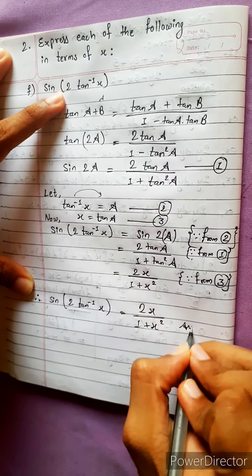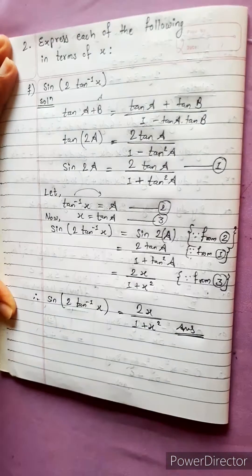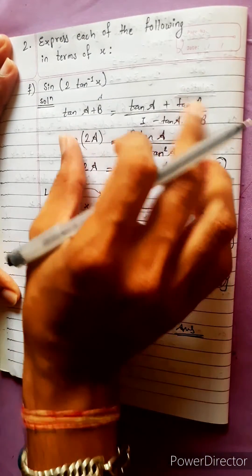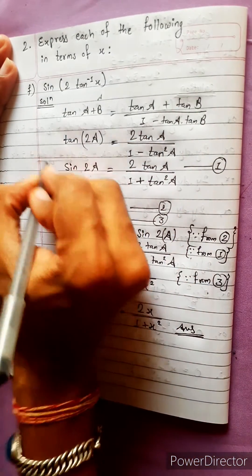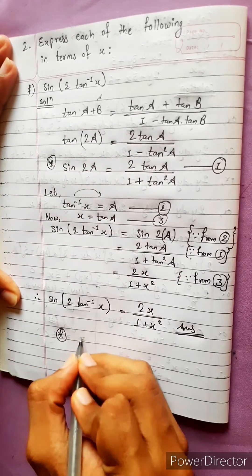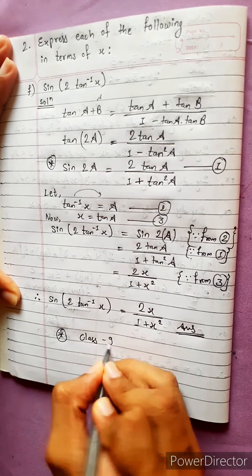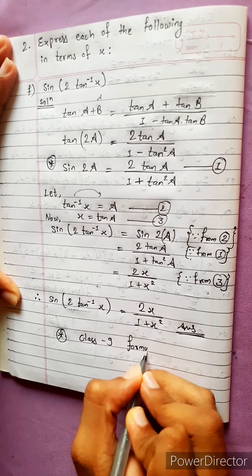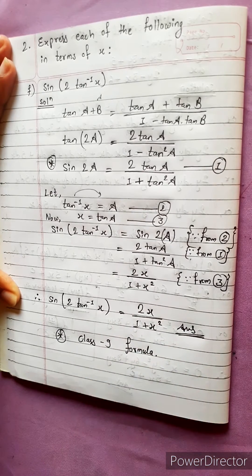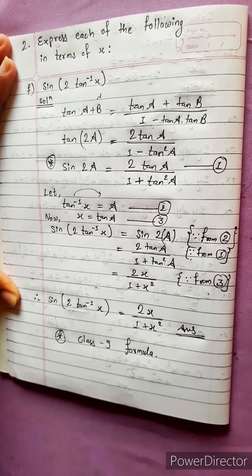This question is actually very easy where you must, you might be confused is here. I think you might be confused here. What is this? This is class 9 formula. Okay, now no confusion. Now be ready for next question.